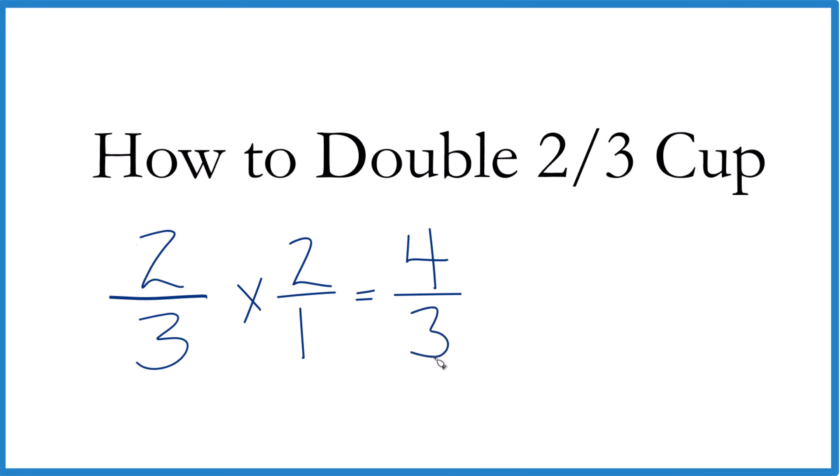So you end up with four-thirds of a cup, which may not be super useful to you. But think of it this way. You have four one-third cups, three one-thirds cups. That would be one cup with one left over. So you'd end up with one and one-third of a cup. So when we double two-thirds cups, we get one and one-third cup.